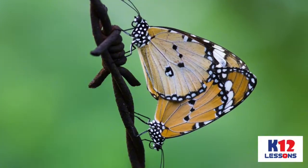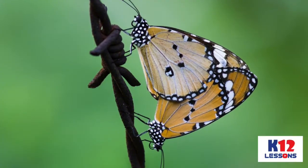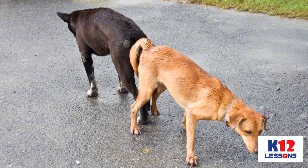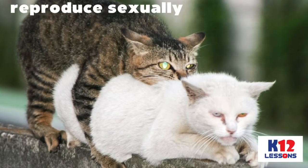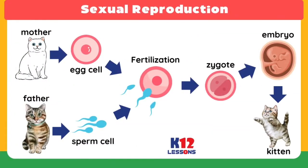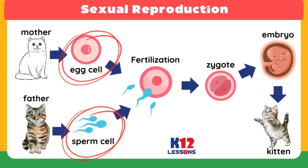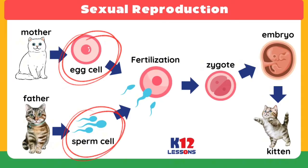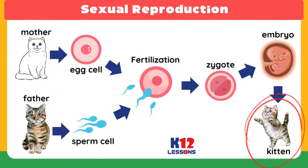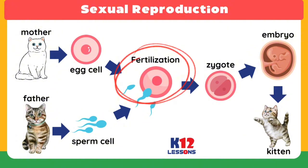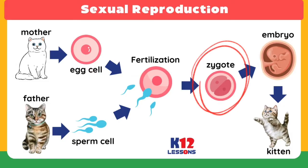All of these animals — the butterflies, frogs, mosquitoes, dogs, and cats — reproduce sexually. Sexual reproduction takes place when sex cells from two parent animals, one male and one female, unite to form a new animal through fertilization. The fertilized egg is called a zygote.